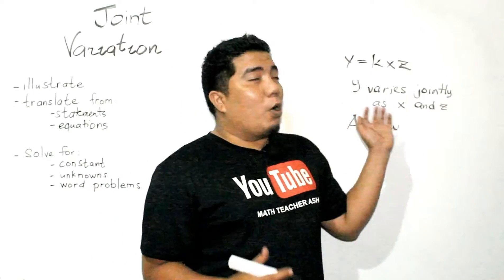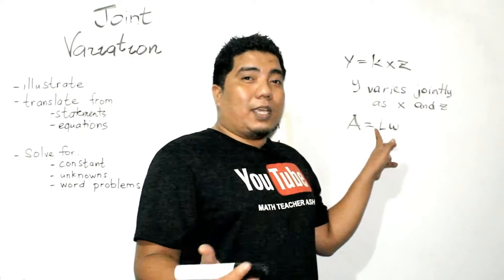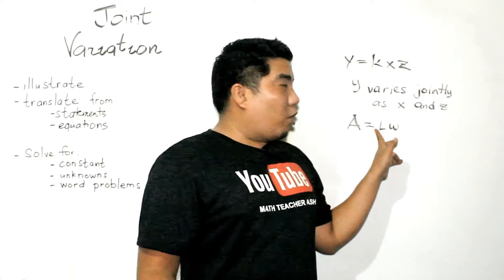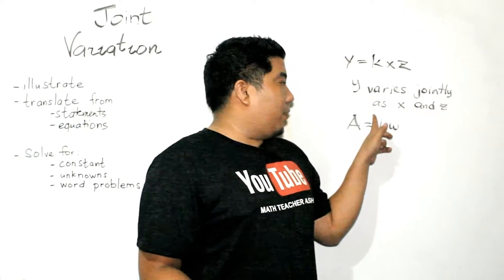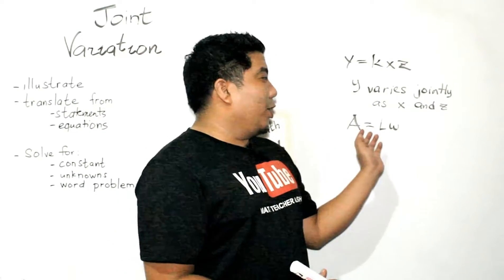Now, you might be asking me, what is the constant of variation here? Basically, the constant of variation here is one. Since it is already common knowledge for us that if there is a one coefficient there, we don't need to put the number, right?